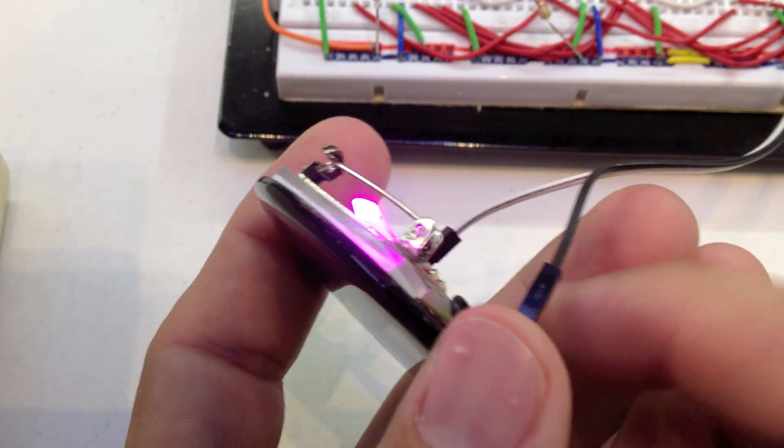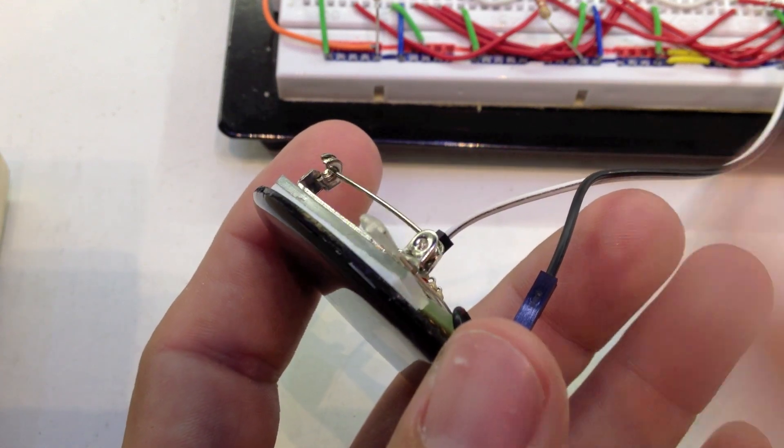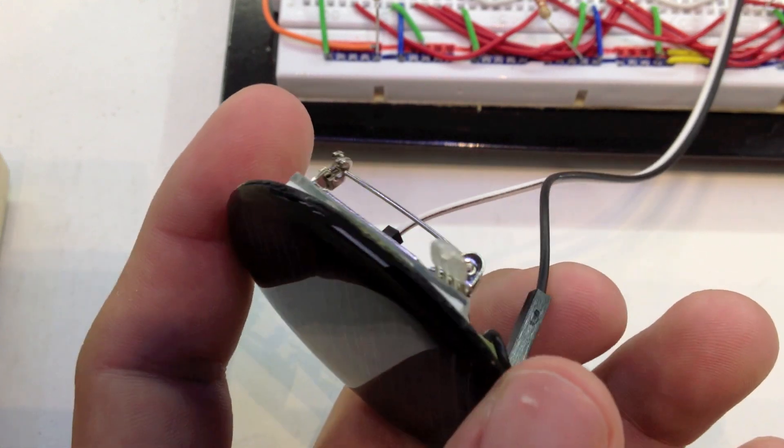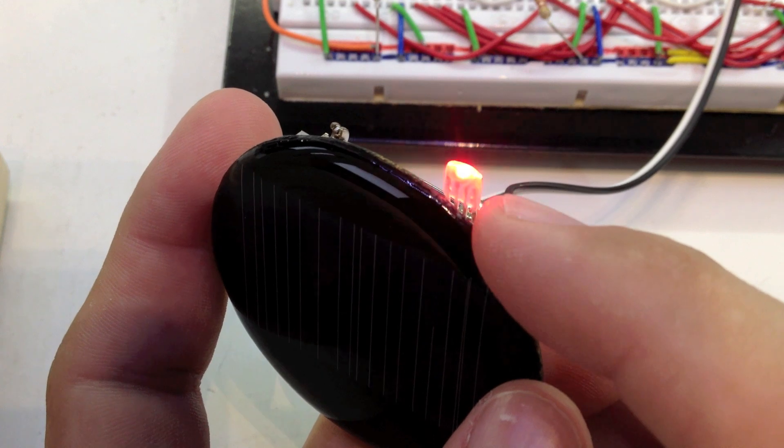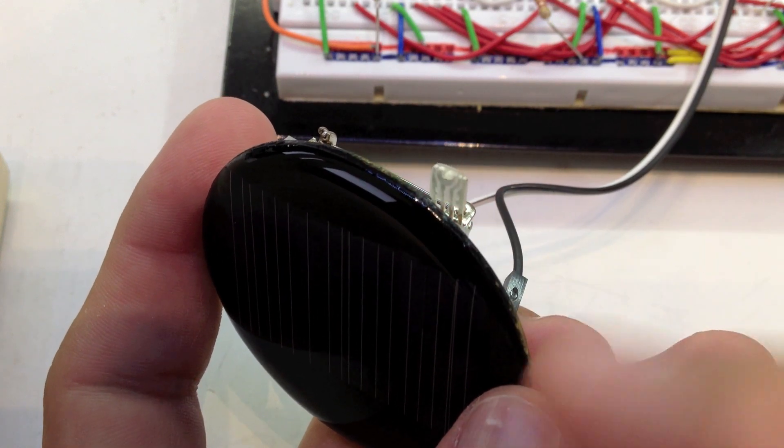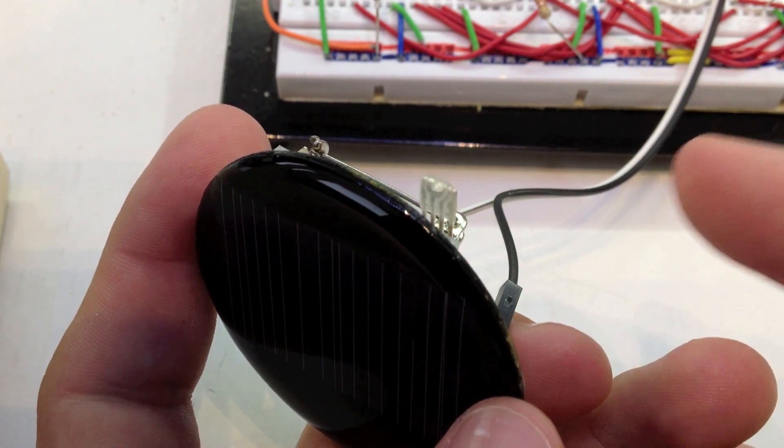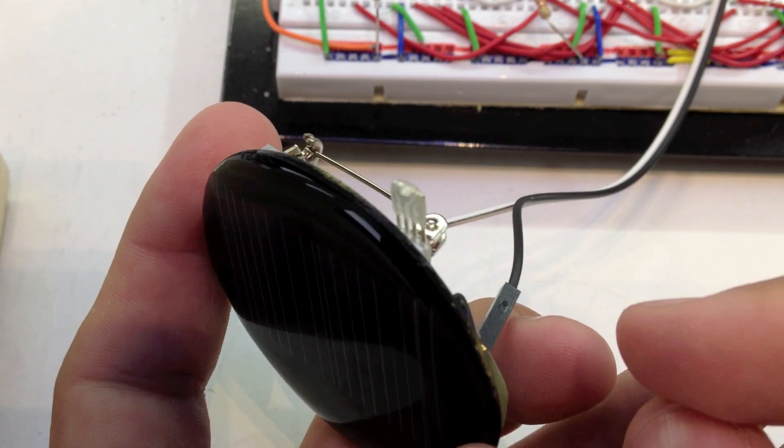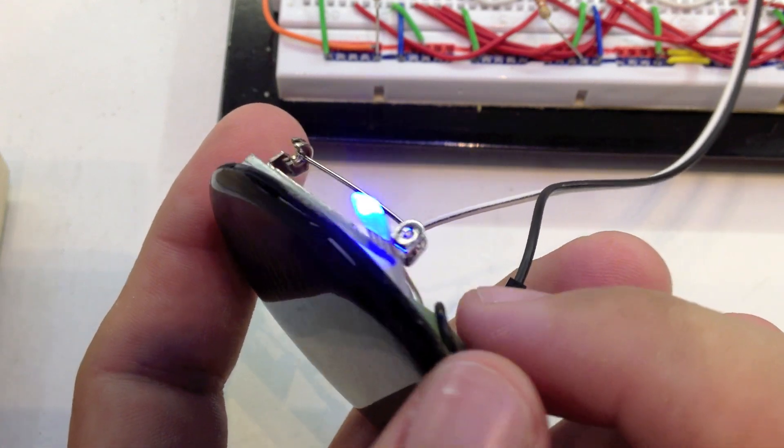So there's a third option, mode number three. And mode number three just continuously flashes the temperature on the LED. It does it in red, and then it does it in green, and then it does it in blue. And so you can walk around constantly displaying the temperature and have people ask you what in the world is that thing.